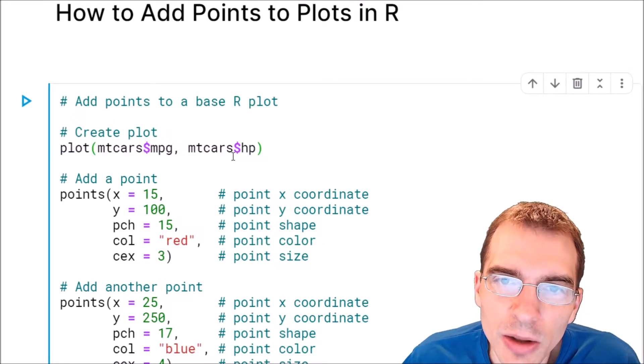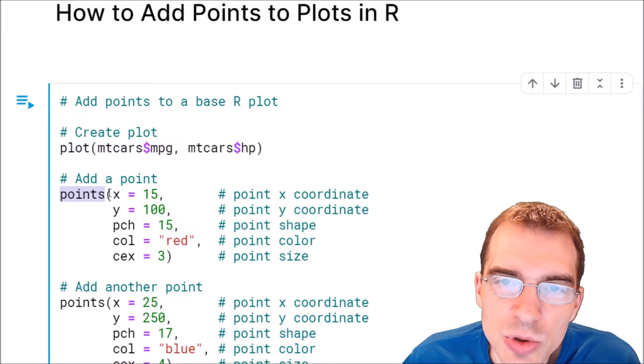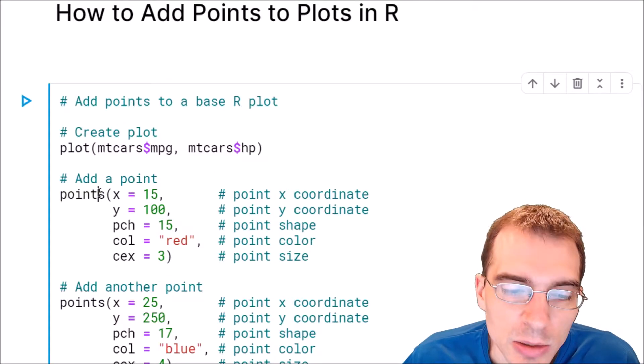You add another function call called points. And that allows you to specify the coordinates of a point to add to that plot. So here we're going to add a point by saying points.